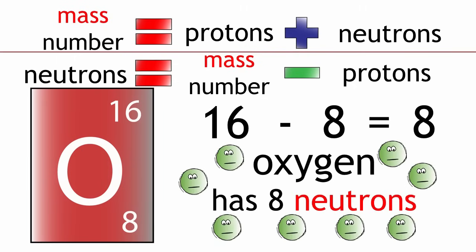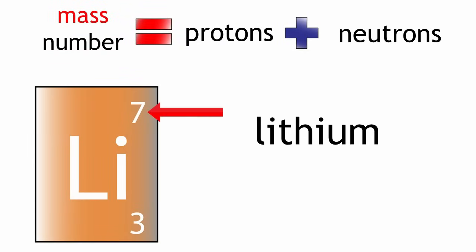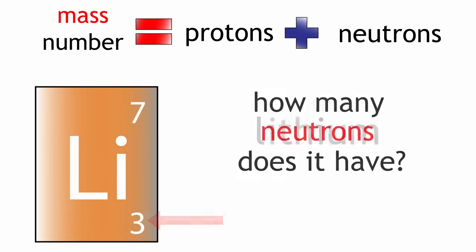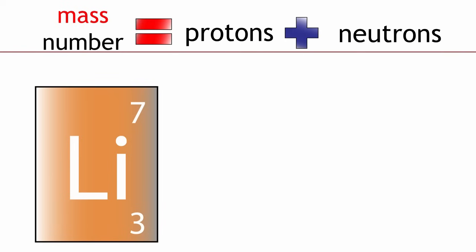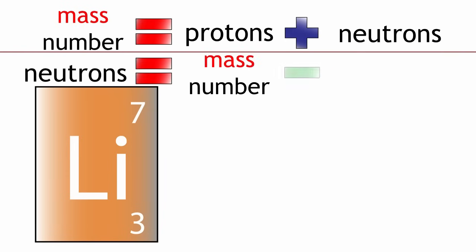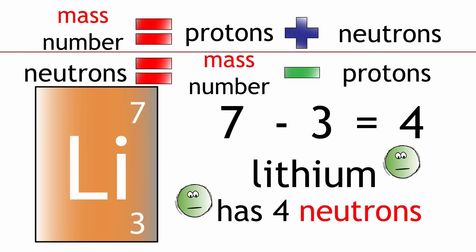Let's take another example. Lithium has a mass number of 7 and has 3 protons. How many neutrons does it have? Mass number equals protons plus neutrons. We can rearrange this to show that neutrons equals mass number minus protons. Neutrons equals 7 minus 3 equals 4. Lithium therefore has 4 neutrons.